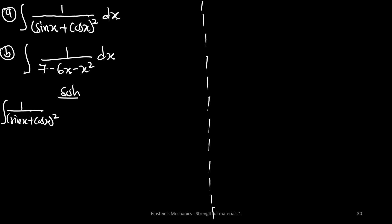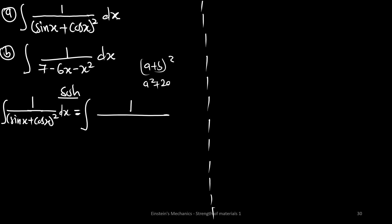We can bring the 1 in the middle. Since the whole bracket is squared, we are going to expand using (A + B)² = A² + 2AB + B². So this gives us sin²x + 2 sin x cos x + cos²x, all in the denominator, dx.